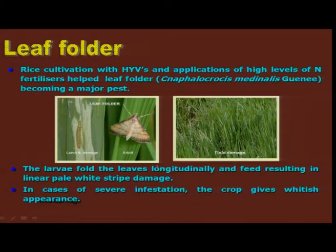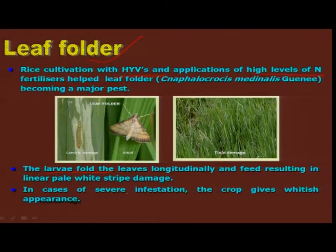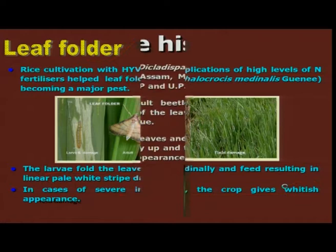The next important pest in low lying areas, particularly in irrigated situations, is leaf folder, Cnaphalocrocis medinalis. Particularly in high yielding varieties and where there is a high level of nitrogenous application, this has become a problem. The larvae is the damaging stage — they fold the leaves longitudinally and then feed on the green matter, leaving a whitish appearance on the paddy plants in the field.